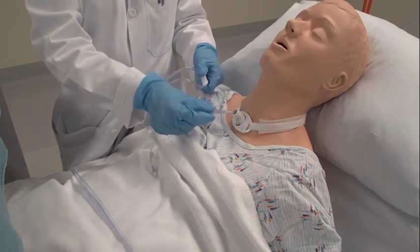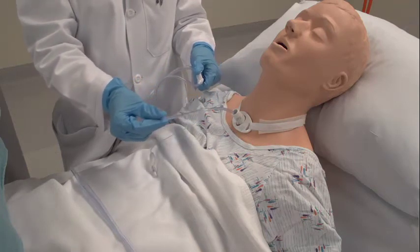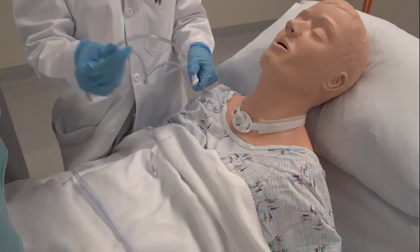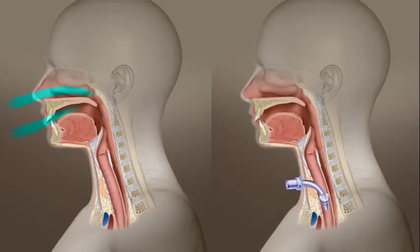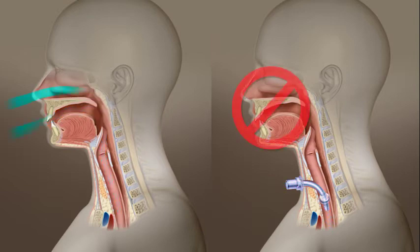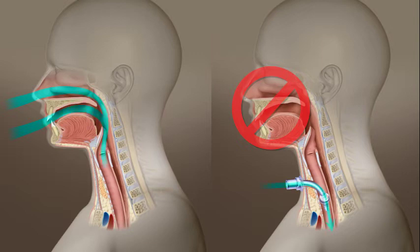A number of changes occur after a tracheotomy, so a period of adjustment is often necessary. The first change is that air bypasses the nose. Ordinarily, a function of the nose is to warm and humidify air as it passes to the lungs. Because this function is lost, there is a need for an alternative means of humidification to avoid dryness, which can lead to discomfort and a buildup of dry secretions.